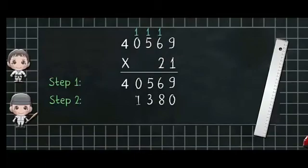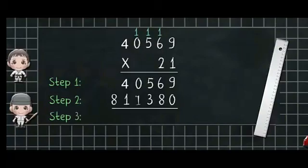Now 0 into 2 is equal to 0 plus 1, that is 1. And lastly 4 into 2 is equal to 8.